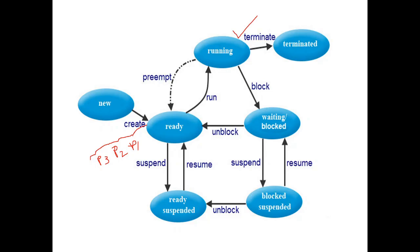Using the scheduling algorithm, the operating system picks one of the processes from the ready state and sends it to the CPU for execution. Whichever process is being executed by the CPU is in the running state. From the ready state, that process changes its state to the running state, meaning it is currently being executed by the CPU.